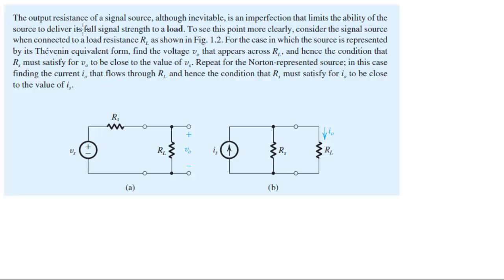let's do this problem where they tell you that the output resistance of a signal source, although inevitable, is an imperfection that limits the ability of the source to deliver its full signal strength to a load. So they want you to do this problem to see this point more clearly. And they want you to look at these two figures. They want you to find the output voltage and output currents with respect to RL.